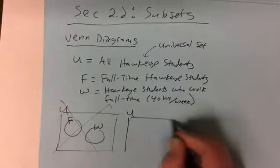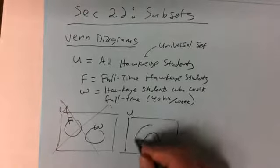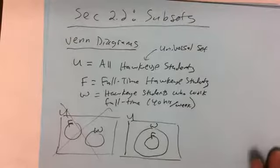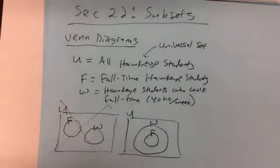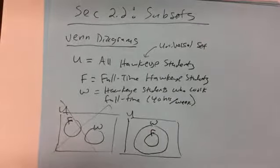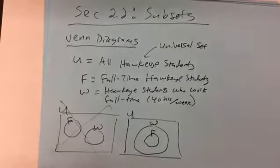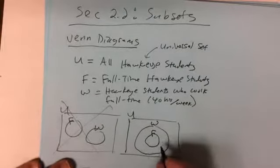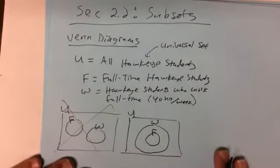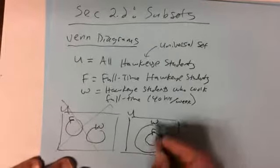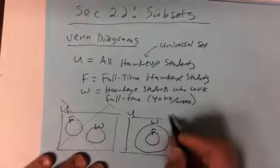I could try another relationship. What if the F circle was entirely inside the W circle? That would say all students who go to school full-time also work full-time, which is the 'all A's are B's' relationship from Euler diagrams. That's certainly not the case either.